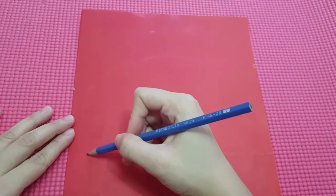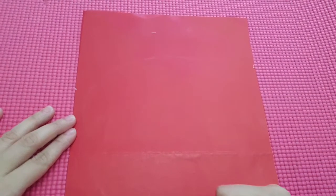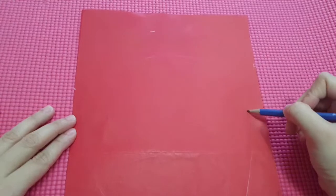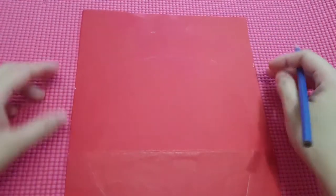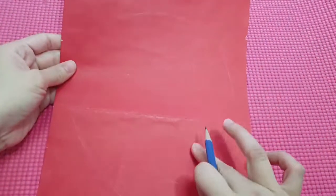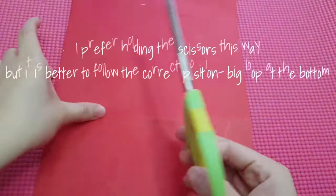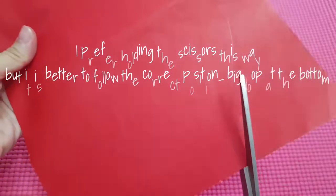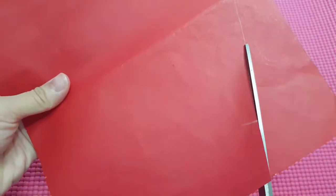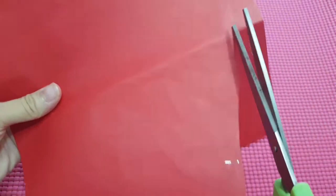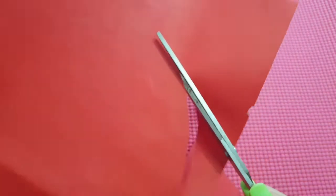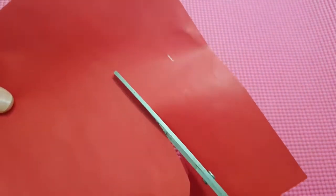First we're gonna draw an oblong shape on the red paper using the pencil like this. Now let's take the scissors and cut it out. Make sure to follow the drawing line. Gentle reminder children, when you're cutting the paper make sure to do it carefully or with your parents' help.